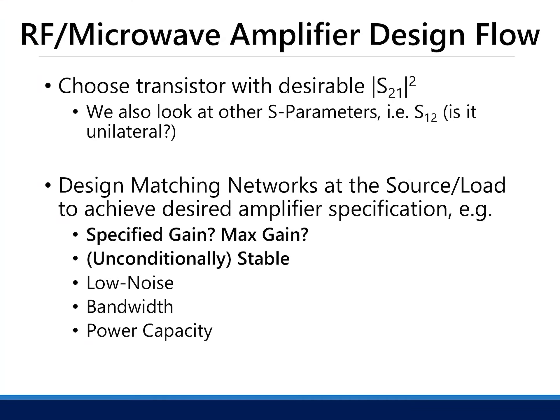How do we design microwave amplifiers? The first step is to choose a transistor. There are a lot of transistors built for different applications. You want to choose one that works at your specified frequency with a certain |S21|² — this is the insertion gain. We also check if your transistor is unilateral. If it is unilateral, the design process becomes easier. Most practical transistors are actually unilateral. So choose a transistor within your frequency of interest — say 2.4 GHz, which is a Wi-Fi frequency — and check if it is unilateral.